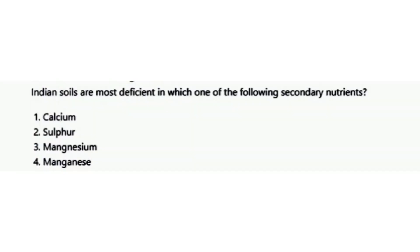The next question: Indian soils are most deficient in which one of the following secondary nutrients? The options are calcium, sulfur, magnesium, and manganese. The correct answer is option 2, that is sulfur.